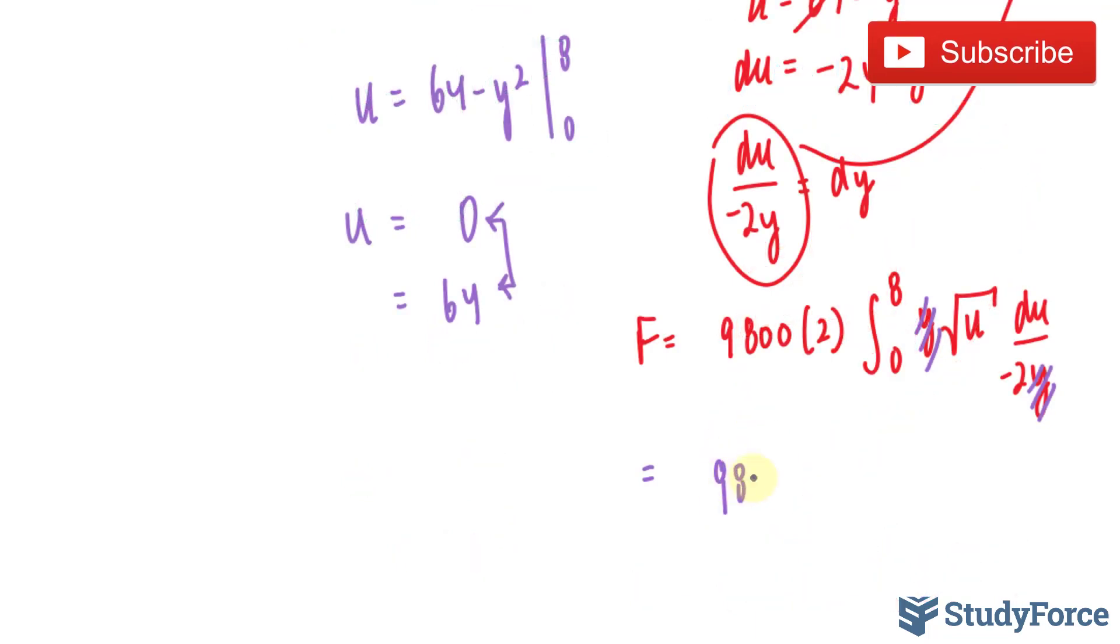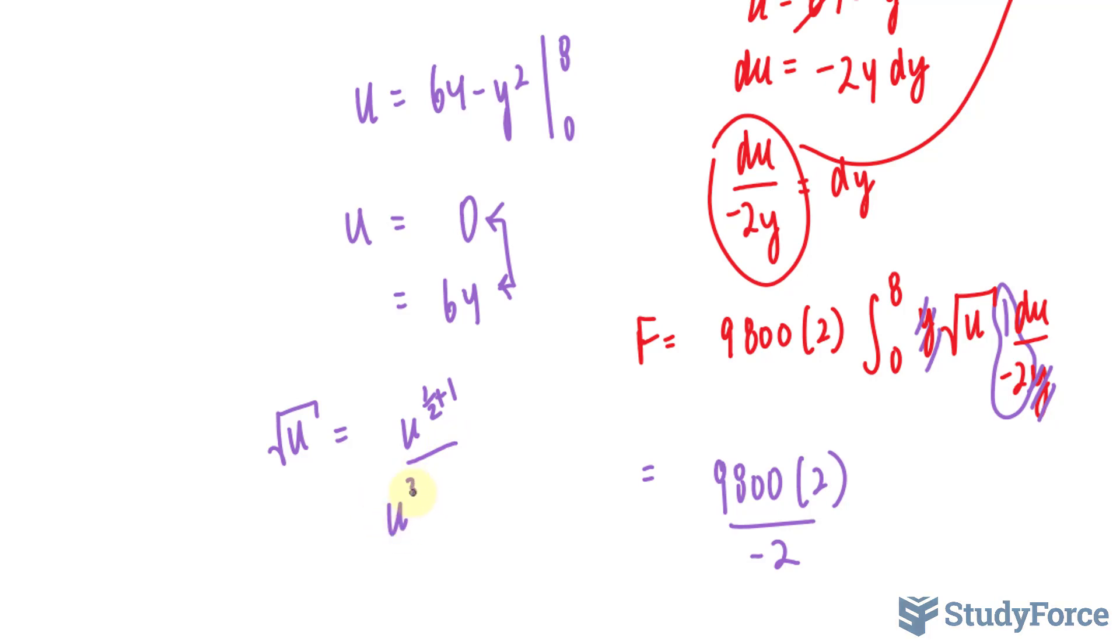9,800 times 2, and I'll pull out my half. And now I'll take the integral of the square root of u. That's not hard to do. We'll convert it into fractions, add 1, that gives us u to the power of 3 over 2 over 3 over 2, or 2 times u to the power of 3 over 2 over 3. 2u to the 3 over 2 over 3, substituting 0 and 64.